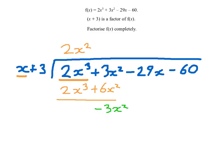What do I need to times x by here to make minus 3x squared? That would be minus 3x. Minus 3x times x is minus 3x squared. Now minus 3x times 3 is minus 9x.